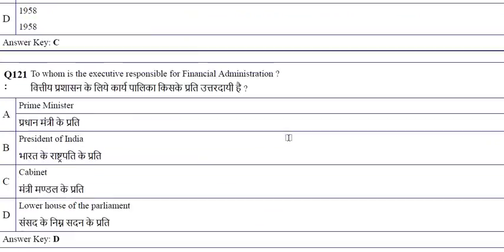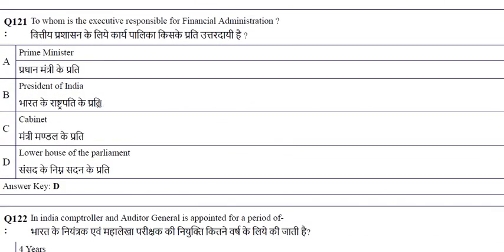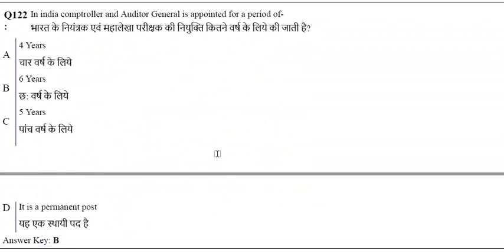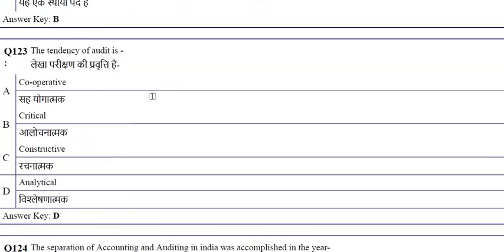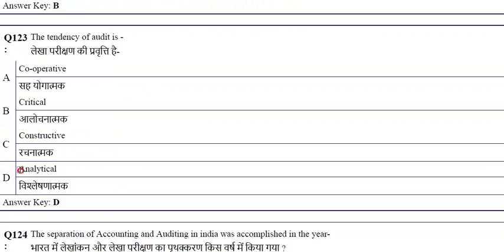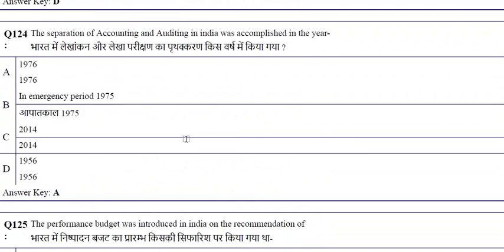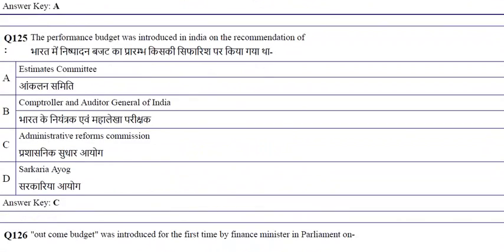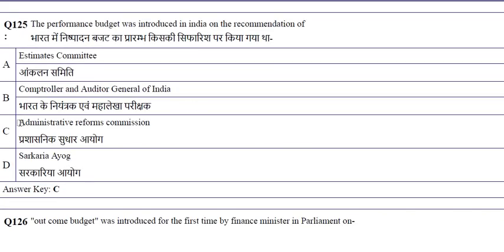The executive responsibility for financial administration lies with the lower house of Parliament. In India, the Comptroller and Auditor General (CAG) is appointed for a period of six years. The separation of accounting and auditing in India was accomplished in the year 1976. The performance budget was introduced in India on the recommendation of the Administrative Reform Commission.